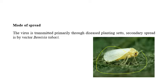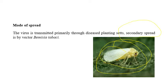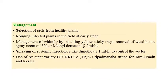The virus is primarily transmitted through infected planting materials — that is, plant sets. Secondary spread is mainly due to the insect vector Bemisia tabaci, the whitefly.